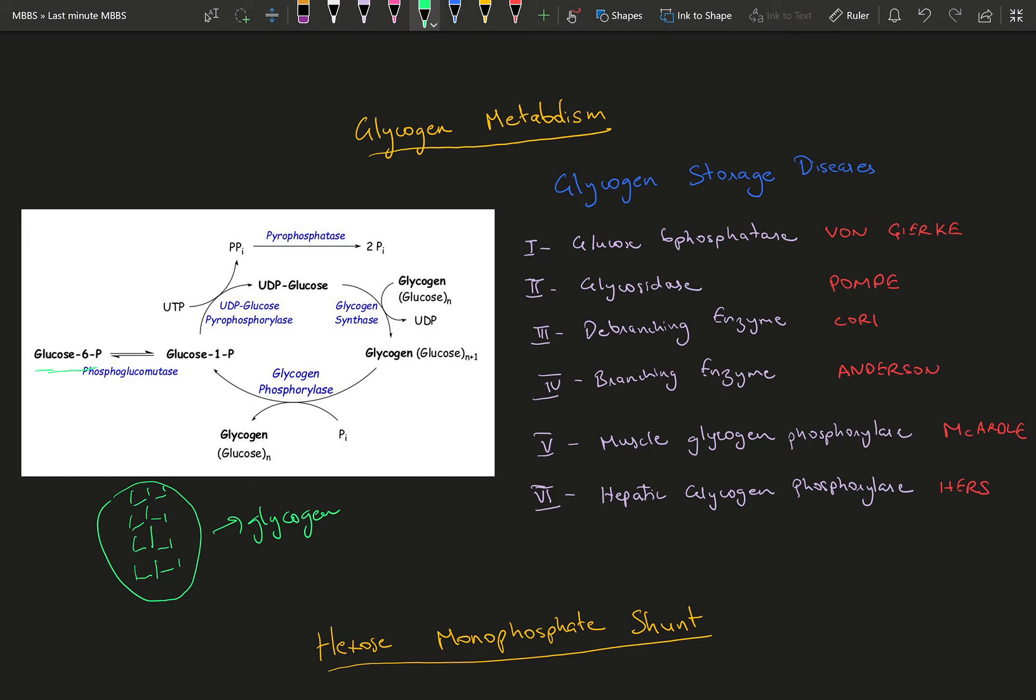Glycogen is stored in various parts of the body. Mainly it can be seen in muscles, liver, and certain other areas. And it can be retrieved easily for energy.